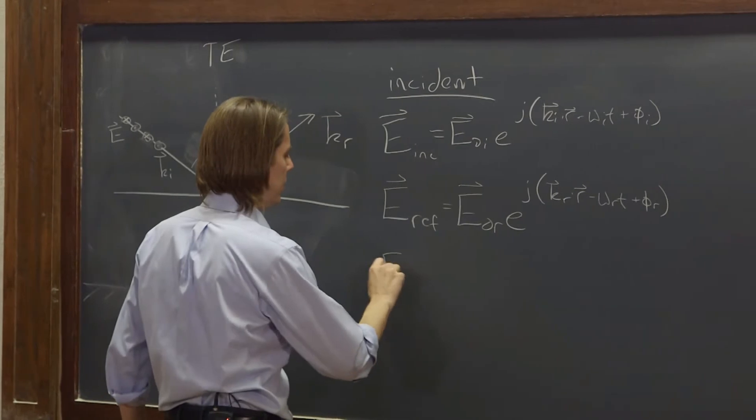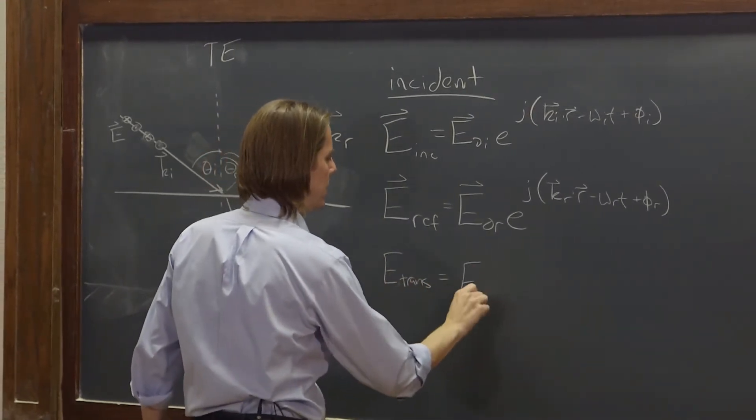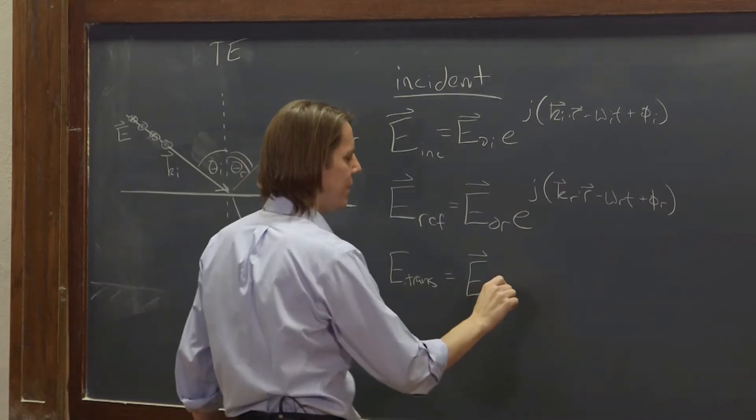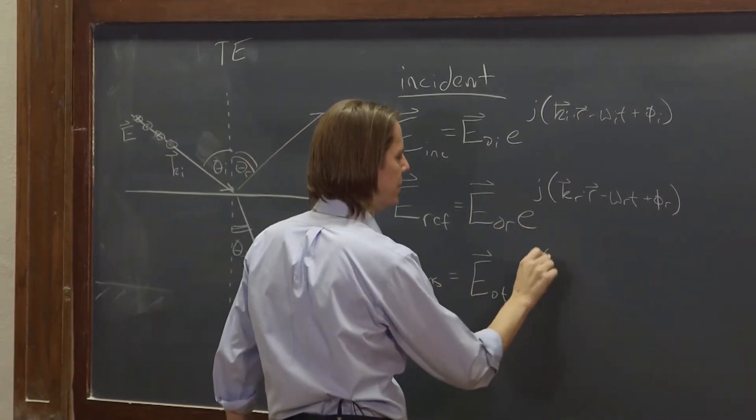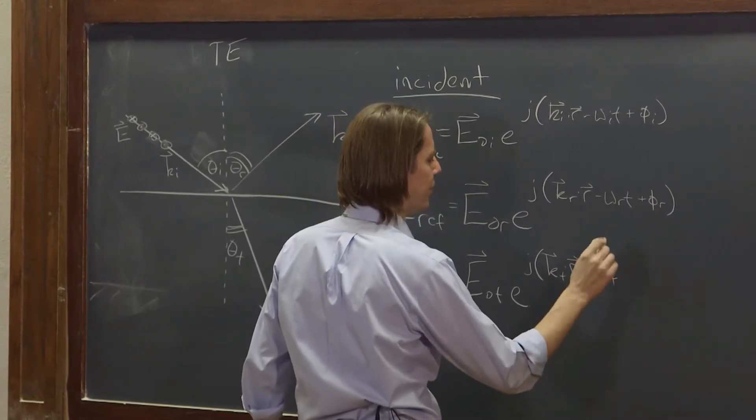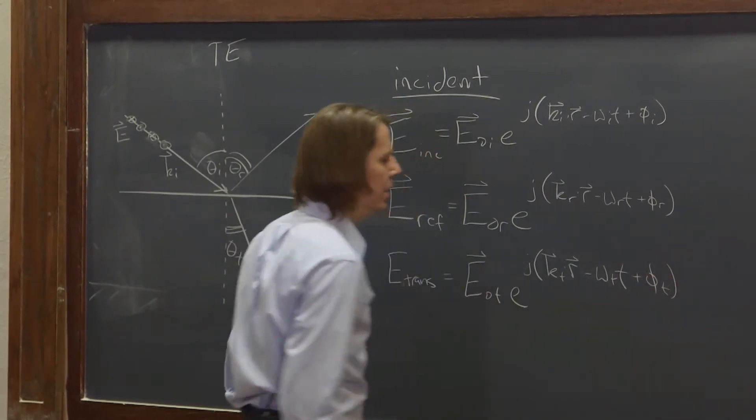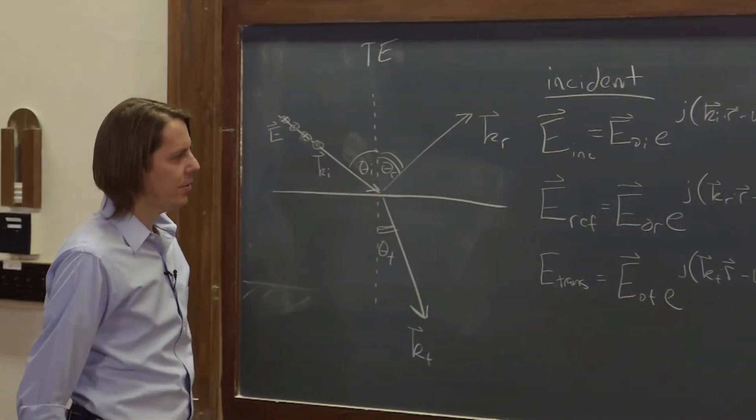And then, of course, there's the transmitted plane wave, E-not-T vector amplitude, E to the J, K-transmitted wave vector dot R, minus, maybe it's at its own frequency, omega-T times time. And maybe it has a phase lag. Okay. There they are.